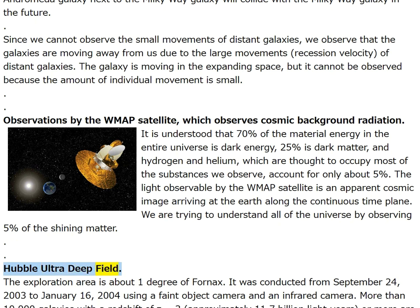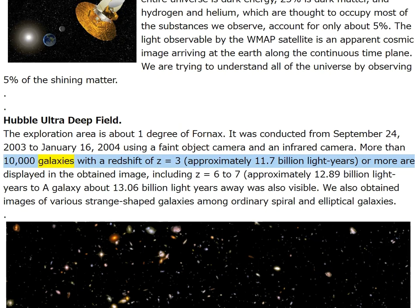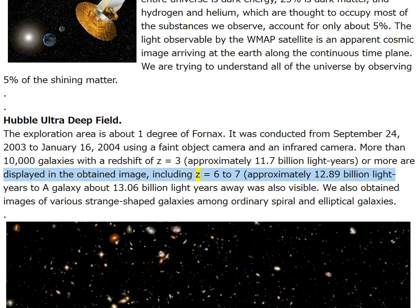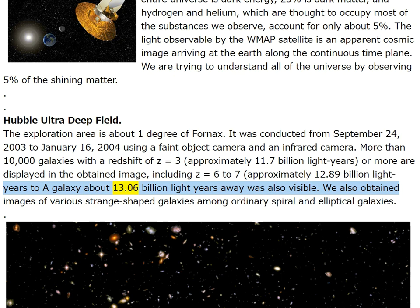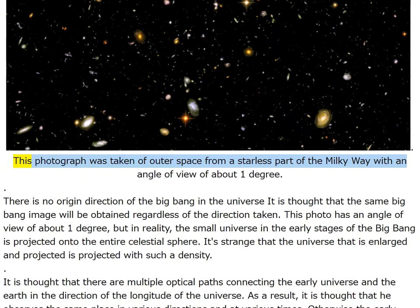The Hubble Ultra Deep Field: the exploration area is about one degree of Fornax, conducted from September 24, 2003 to January 16, 2004 using a faint object camera and an infrared camera. More than 10,000 galaxies with a redshift of z ≥ 3 (approximately 11.7 billion light years or more) are displayed, including z = 6 to 7 (approximately 12.89 billion light years), to a galaxy about 13.06 billion light years away.